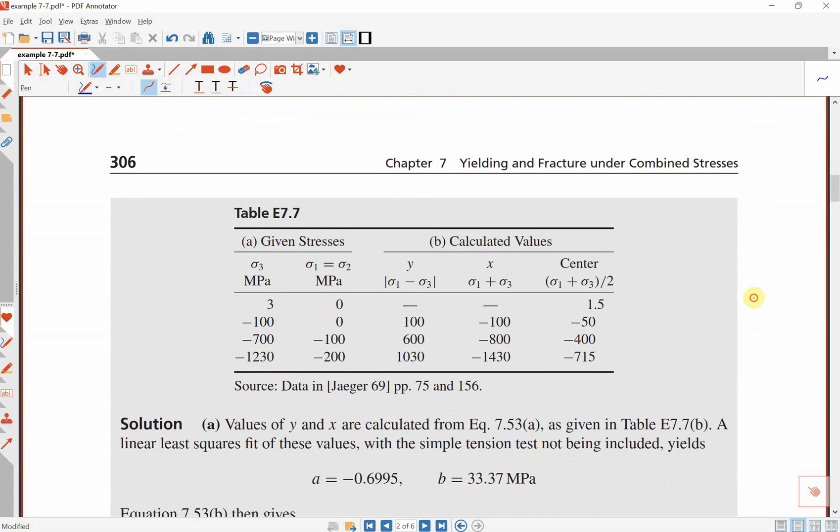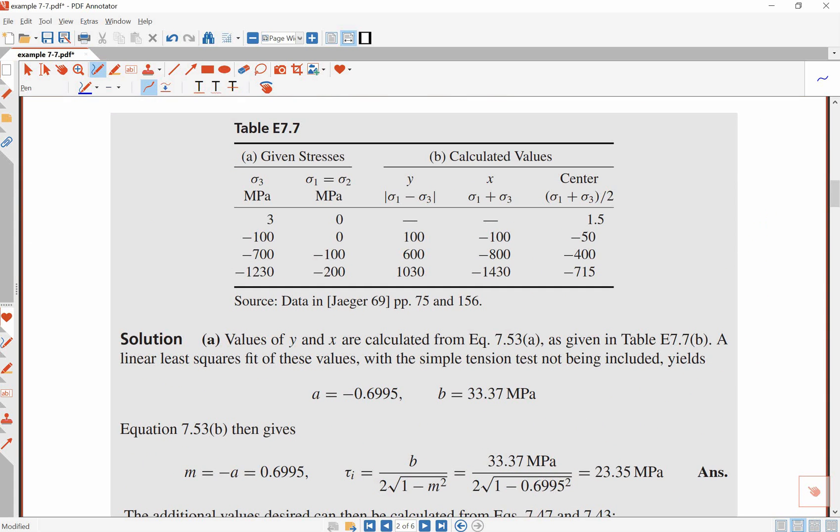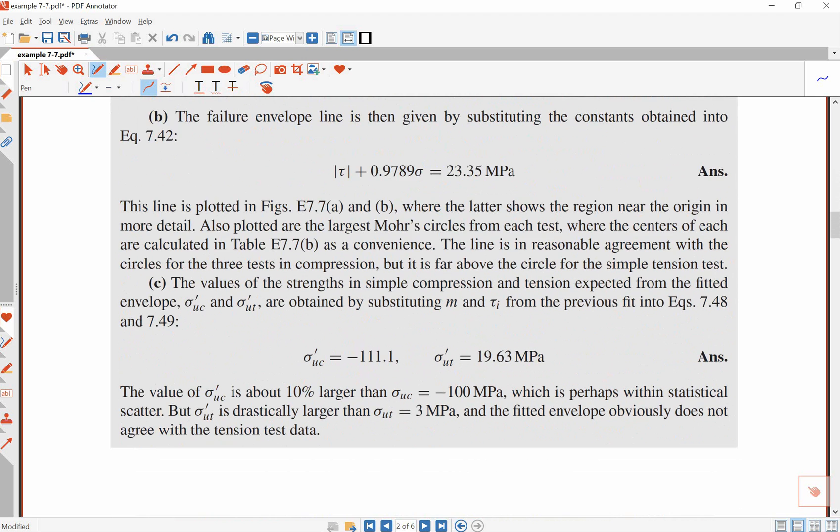The question that I was asked was about how to find these two variables, a and b. So as we see in this table, we have a couple of test data here. Sigma 3 is 0, sigma 1 and sigma 2 here is 0, and that's for the first test. And for the second experiment, sigma 1 and 2 are 0 and sigma 3 is minus 100, and so on. So in order to find a and b, we need to use linear least square method, and I'm going to describe how to find that method here.